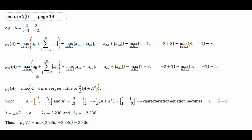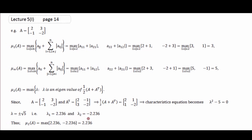Maximum norm LM measure میں i fix کریں، j change کریں لیکن i = j نہیں آ سکتا۔ I=1: a₁₁ + |a₁₂|؛ i=2: a₂₂ + |a₂₁|۔ Values compute کی اور maximum لیا: 5 ملی۔ Euclidean LM norm کے لیے (A + Aᵀ)/2 بنایا، characteristic equation سے λ = ±√5 ملے۔ Maximum eigen value √5 ہے — یہ μ₂(A) ہے۔